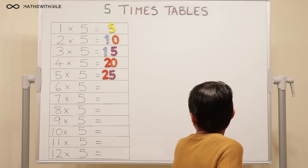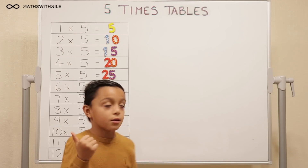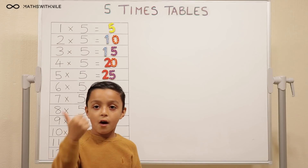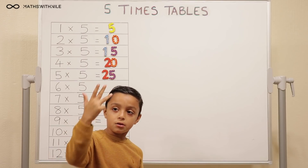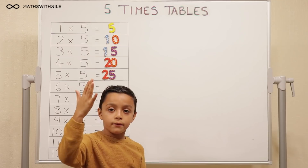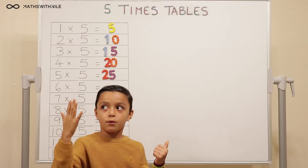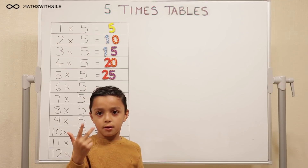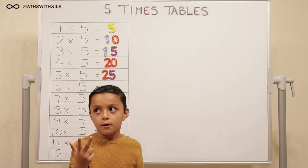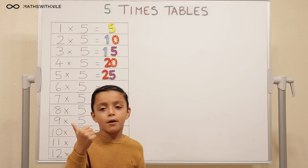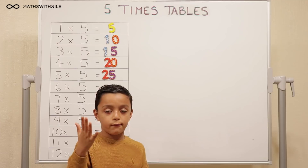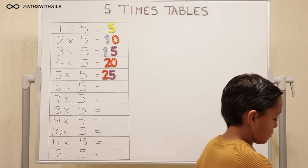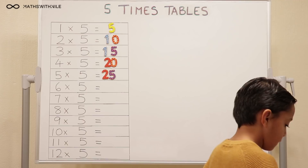And then six times five. Five, ten, fifteen, twenty-five, forty. No, start again. Five, ten, fifteen, twenty, twenty-five, thirty. Thirty. Very good. So six times five equals thirty.